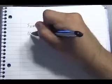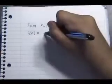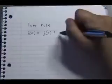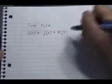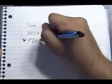The sum rule for derivatives states that if f of x equals j of x plus k of x, then f prime of x equals j prime of x plus k prime of x.